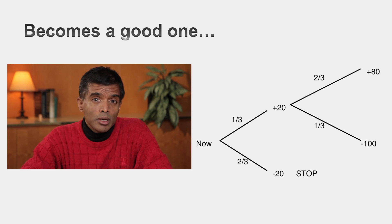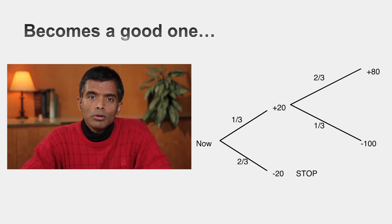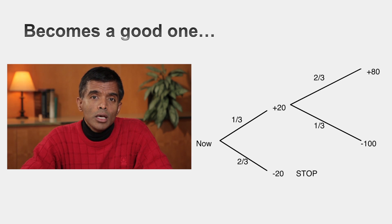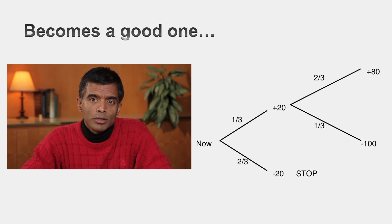If you lose the $20 million, you stop the investment right away. But if you make the $20 million, you continue — and if you win, you make another $80 million, giving a total upside of $100 million; if you lose, you lose another $100 million, giving a total downside of $120 million. This investment is actually equivalent to the first in probabilities, but if you take the expected value, you end up with a positive expected value. A bad investment became a good investment when you took it in two steps.